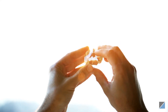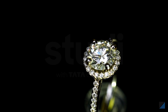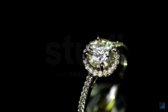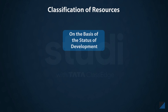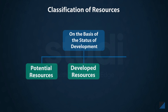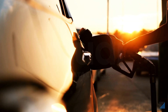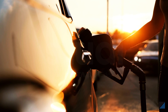Resources may be available in nature, but they become valuable only when they are utilized. Therefore, resources are also classified based on their status of development: some resources have potential for development, some are already in use, and some have available stock but we do not yet have the technology to use them.